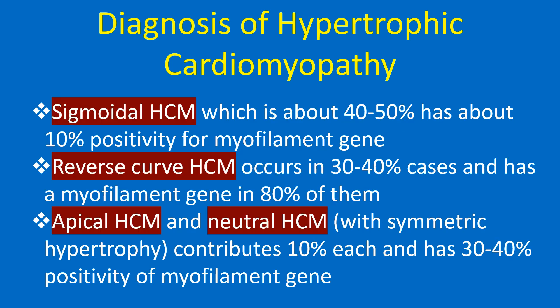Sigmoidal HCM, which is about 40–50%, has about 10% positivity for myofilament gene. Reverse curve HCM occurs in 30–40% of cases and has a myofilament gene positivity in 80% of them. Apical HCM and neutral HCM contribute 10% each and have 30–40% positivity of myofilament gene.